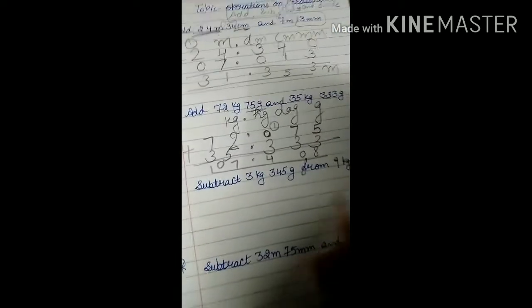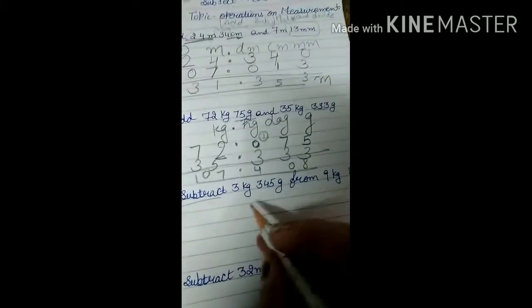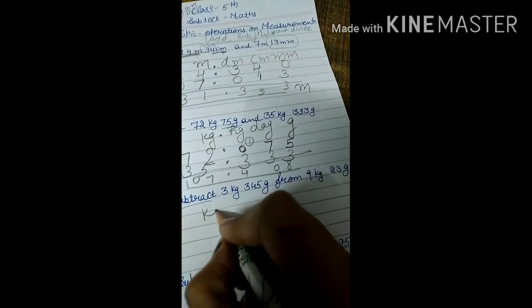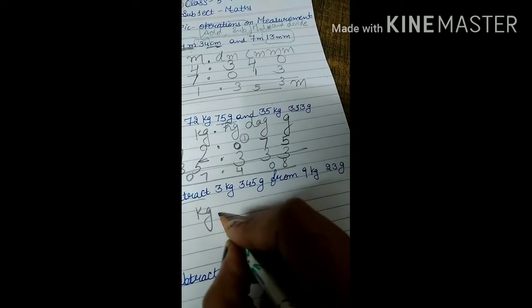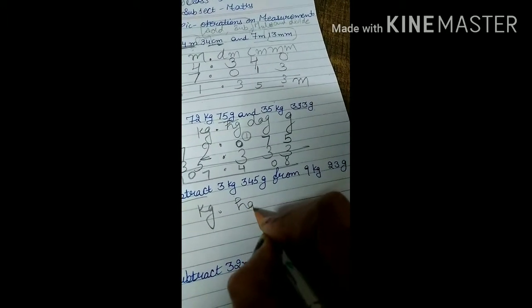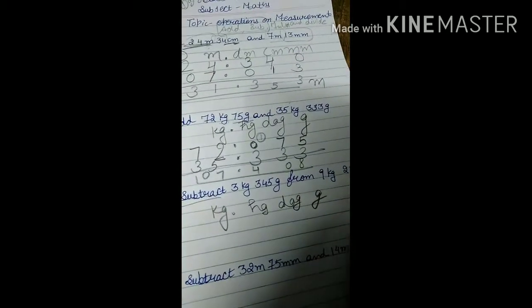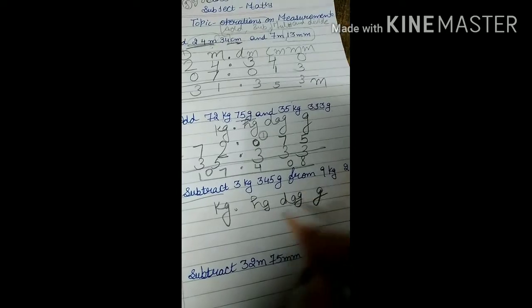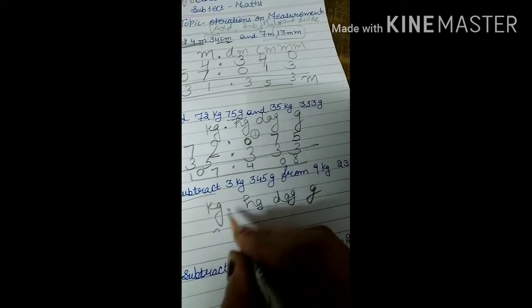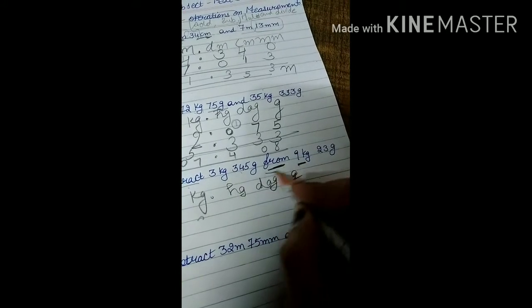Next is subtraction — same method to follow. Write the biggest unit on top; here kilogram is the biggest and gram is the smallest. Write up to gram: hectagram, decagram, then gram. Here we have 3 kilograms 345 grams, and we are subtracting it from another value.